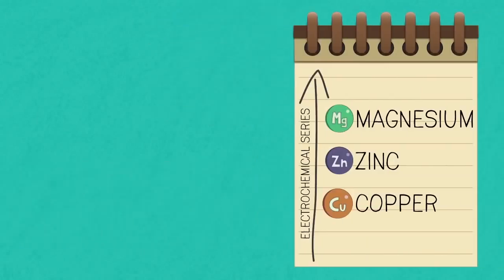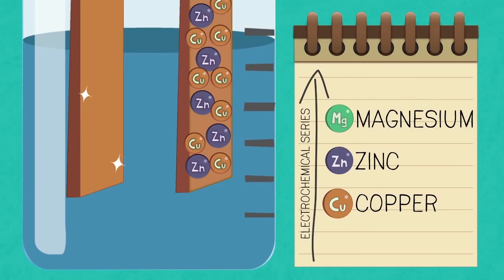Metals above copper in the electrochemical series like zinc will form ions at the anode and dissolve into solution. The copper sulfate solution has to be replaced if the concentration of zinc ions becomes too high.